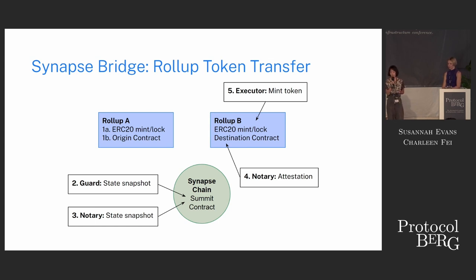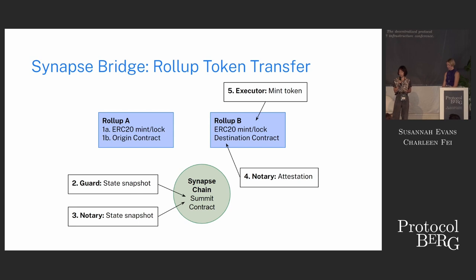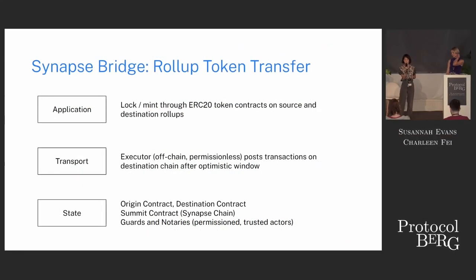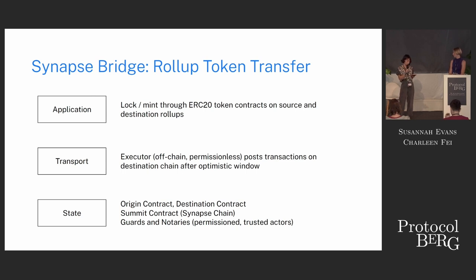The guard submits the snapshot and the notary attests to the validity of the snapshot. Both of these entities, because of their important role in submitting or updating state, are trusted entities. When we have both attestations, a permissionless entity called an executor will trigger the mint token function on rollup B. This is permissionless in the sense that anyone can run an executor, because the trusted state updates are handled by trusted entities on the state layer.